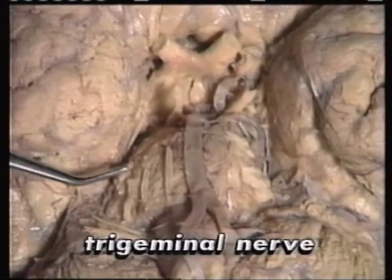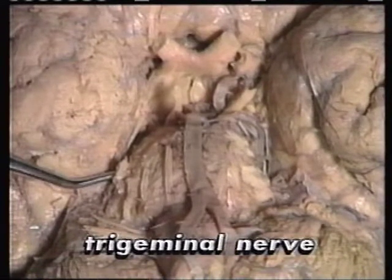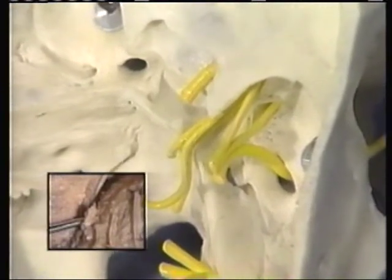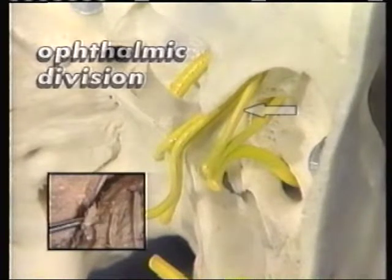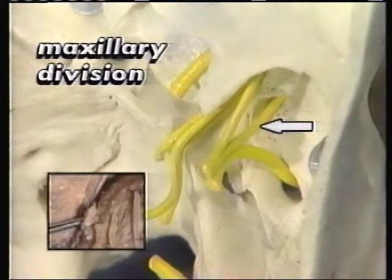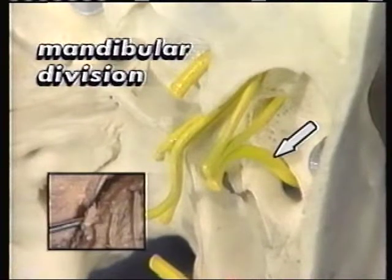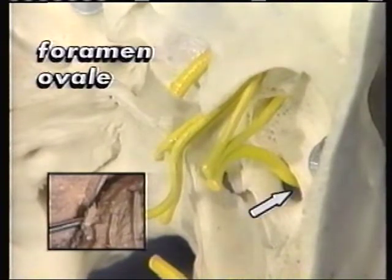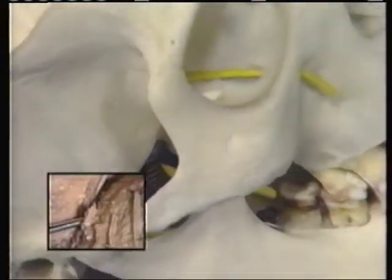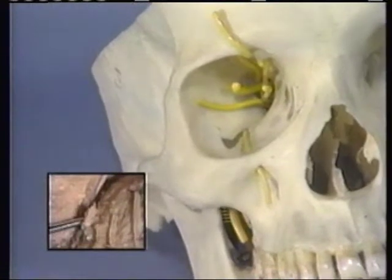The large trigeminal nerve, cranial nerve 5, has three divisions: the ophthalmic division, the maxillary division, and the mandibular division. These divisions course through the skull via three different foramina. The ophthalmic division fibers travel from the face to the pons through the superior orbital fissure. The maxillary division fibers are transmitted from the face through the foramen rotundum. The mandibular division fibers are carried through the skull via the foramen ovale. The trigeminal nerve functions to provide sensory information from the face and part of the scalp, and is motor to the muscles of mastication.